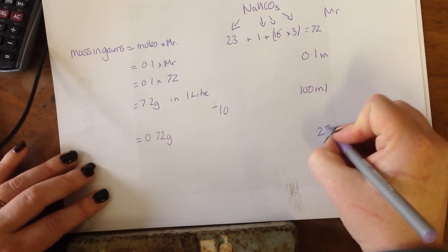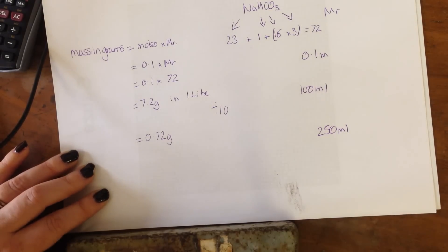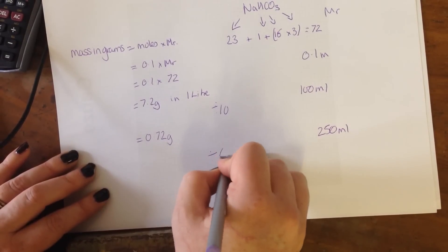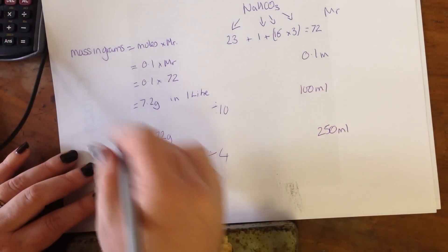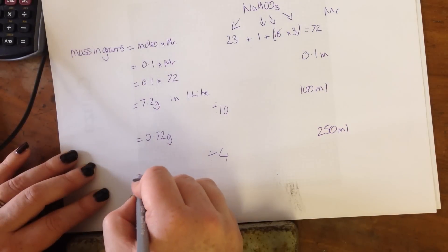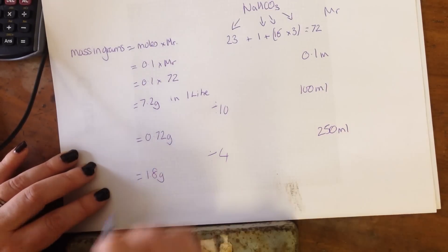If I wanted to make a 250 ml solution, I would just divide that by 4. So 7.2 divided by 4 equals 1.8 grams.